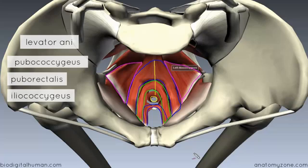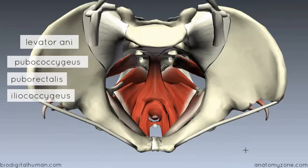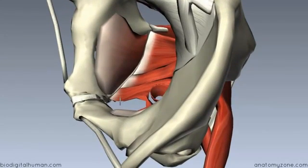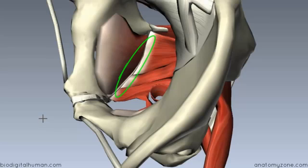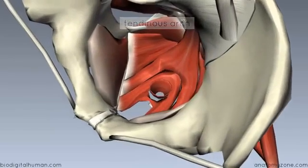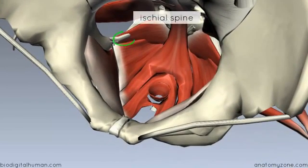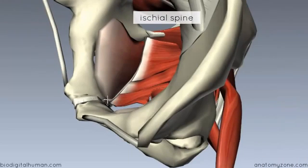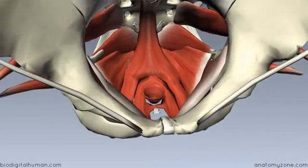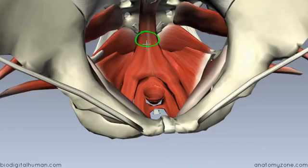This muscle forms the bulk of the pelvic diaphragm. The levator ani is composed of these three collections of muscle fibers. Rotating the model, you can see the origin of the levator ani on the posterior surface of the pubis, and then along the border of the obturator internus muscle. Covering the obturator internus is a fascia with a tendinous thickening called the tendinous arch — this is where the levator ani takes part of its origin. From the body of the pubis along this tendinous arch to the ischial spine, the levator ani takes its origin, then inserts on the coccyx and at the anococcygeal ligament in the midline.